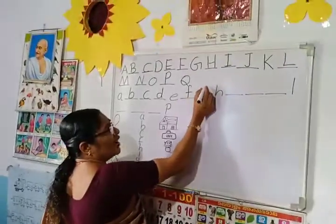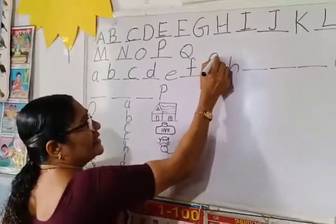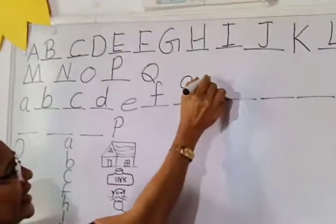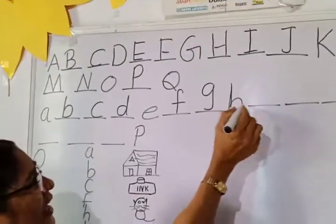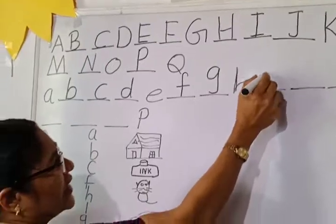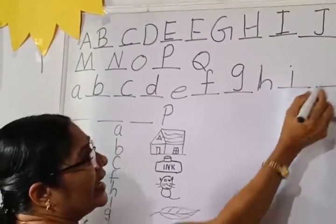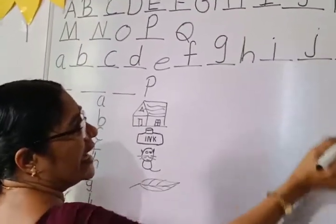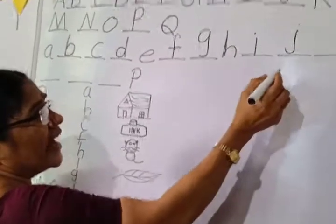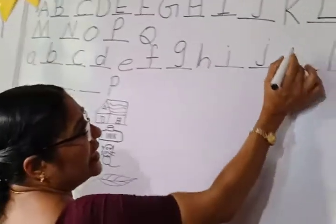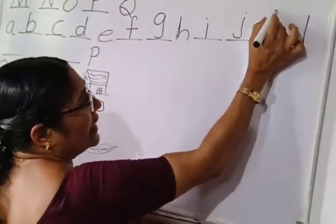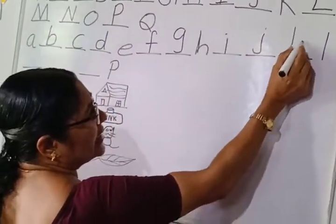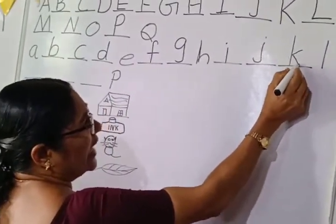F after? G. G after? H. H after? I. I after? J. J after K. Baby letter K — draw the line big and this one small. K.